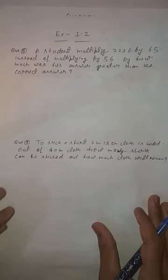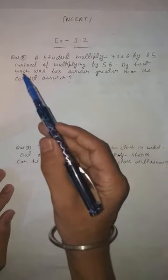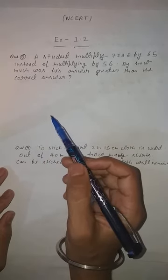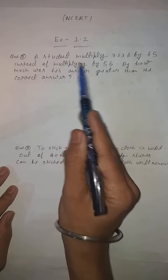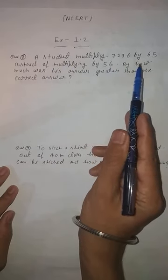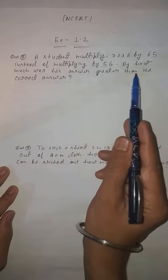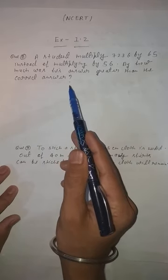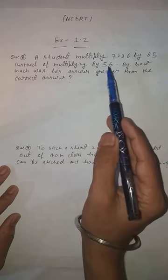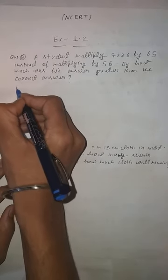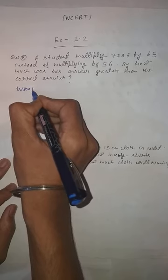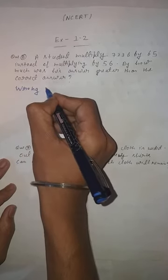In exercise 1.2, I'm taking question number 8 because questions 1 to 7 are based on addition and subtraction — they are easy and you will solve those yourself. Question 8: a student multiplied 7,236 by 65 instead of multiplying by 56. By how much was his answer greater than the correct answer? First we will find the wrong answer.